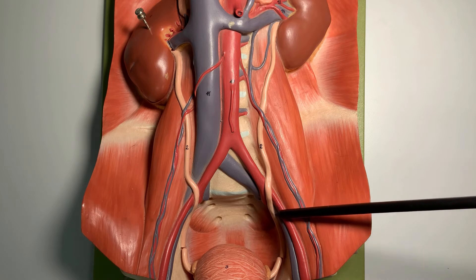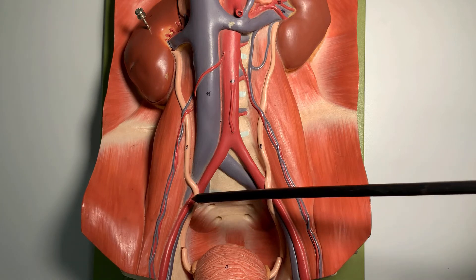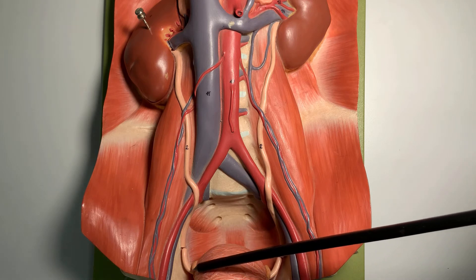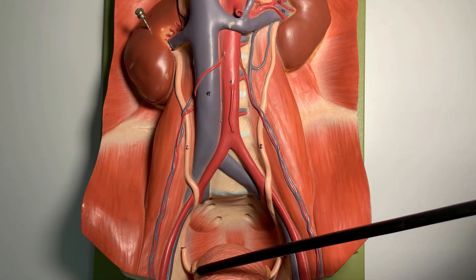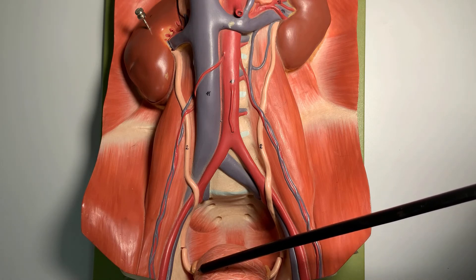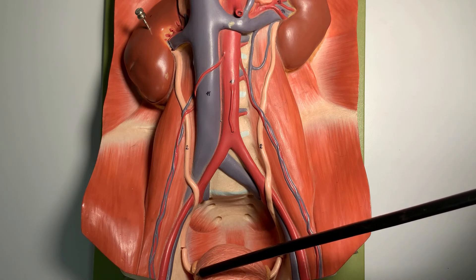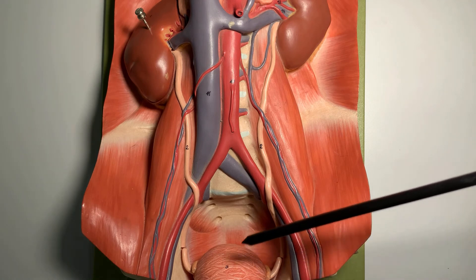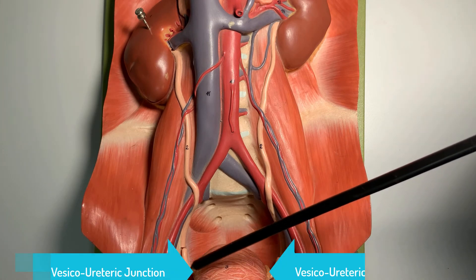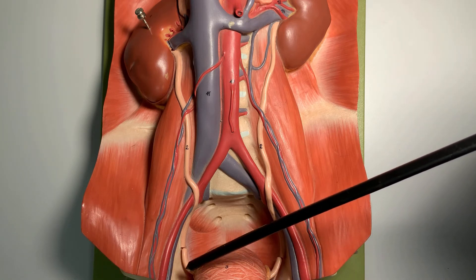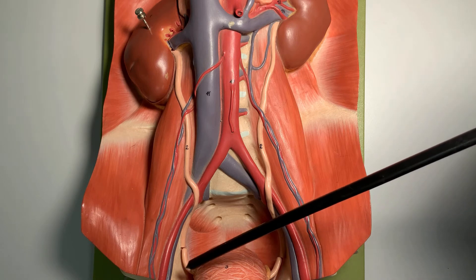The pelvic part of the ureter runs in the pelvic cavity all the way until it enters the wall of the urinary bladder. The moment it enters the wall of the urinary bladder, the third part of the ureter is there, called the intravesical or intramural part. This acts as the third constriction, also called the vesico-ureteric junction.